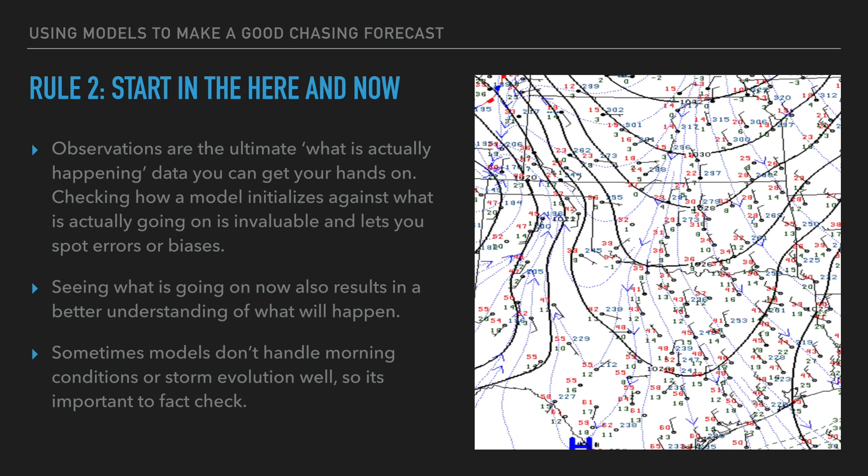Rule number two: start in the here and now. Back to that observational data — surface obs, satellite, radar — they are the ultimate 'what is happening' data you can get your hands on. You don't have to doubt this; very rarely does observational data let you down. You can check how a model is initializing versus what is actually going on. It's invaluable — it lets you spot errors and biases. For storm chasing, the number one thing you're going to be looking at is moisture and seeing if a model is correctly modeling it. The three-kilometer NAM can sometimes be overdoing moisture by five or six degrees, forming storms against a strong cap when they're not actually going to.